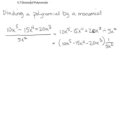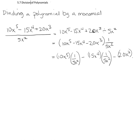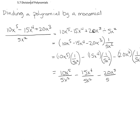Let's take this step by step. I want to distribute this multiplication back through: 10x⁵ times (1/5x²), minus 15x⁴ times (1/5x²), minus 20x³ times (1/5x²). That gives us 10x⁵ over 5x², minus 15x⁴ over 5x², minus 20x³ over 5x². From here I get to reduce each of these fractions.